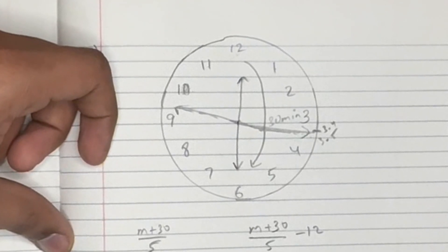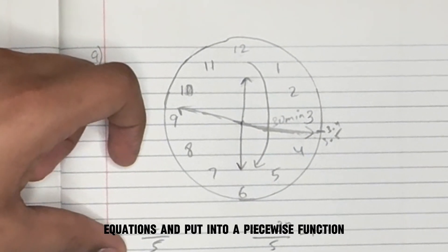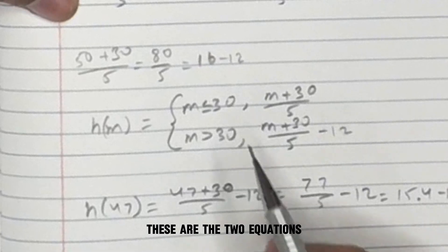This is how you solve this equation. So you have to make two equations and put it into a piecewise function. So these are the two equations.